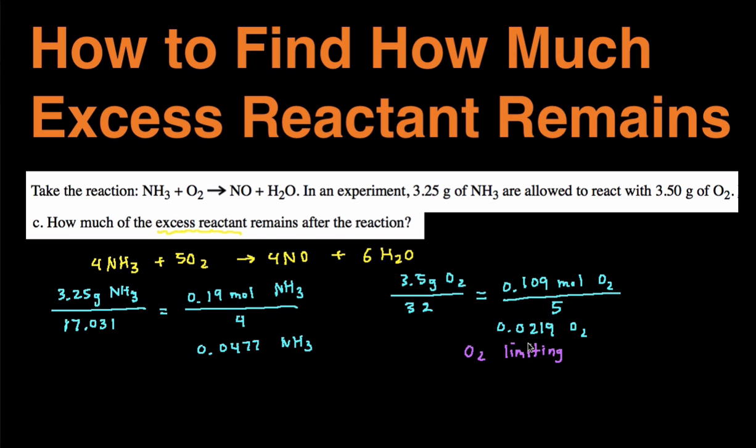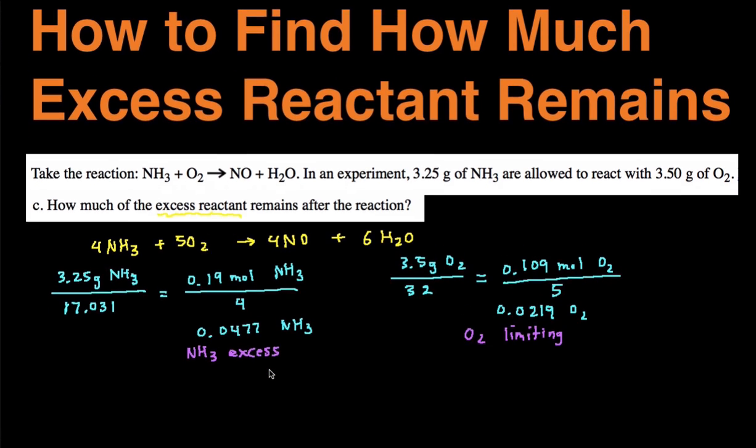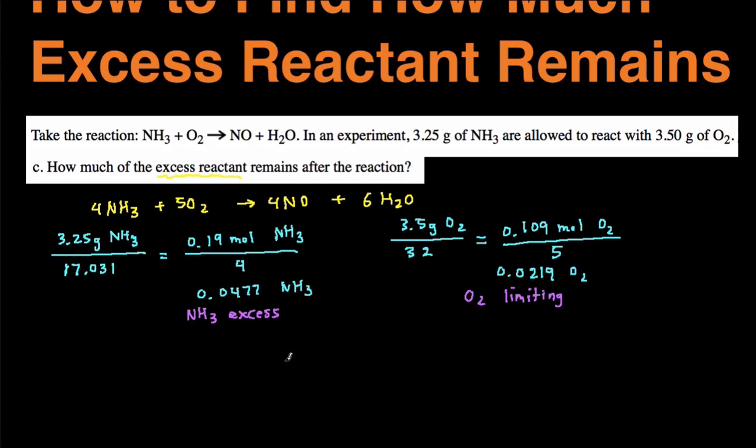So that means all the O2 is going to be used up and it means that there's going to be some NH3 left over, which means NH3 is in excess. Now to figure out how much is left over, we're going to have to do a gram-to-gram conversion. We're going to have to take the grams of the limiting, which is the grams of the O2, and then convert it to grams of the NH3. So doing a gram-to-gram conversion,